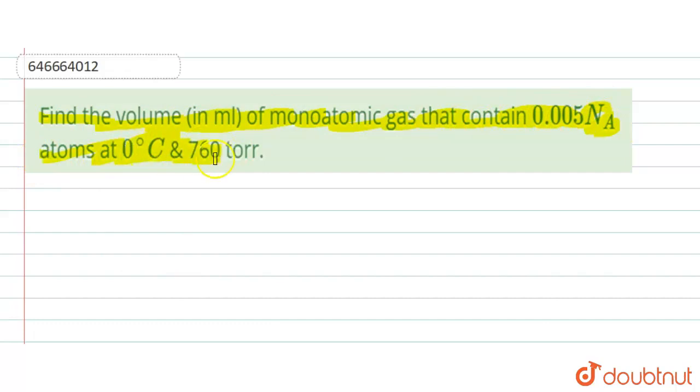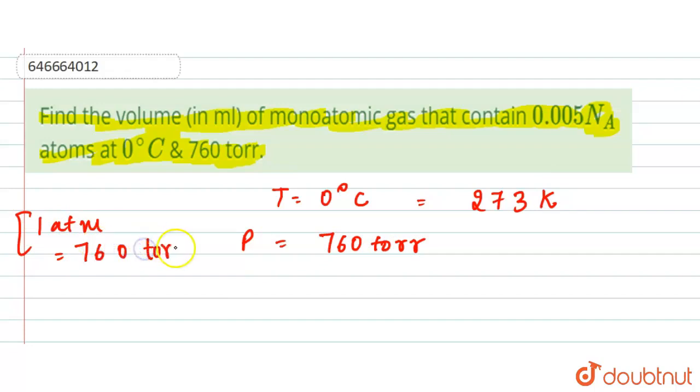So here we are given with the temperature that is 0 degree Celsius, so it will be 273 Kelvin, right? Now here when we have the pressure, pressure is 760 torr, and we know that one atmosphere is equal to 760 torr.